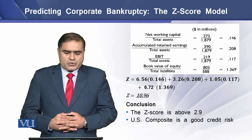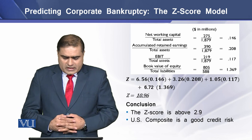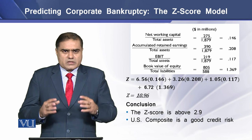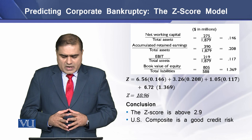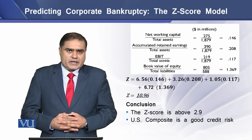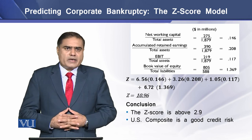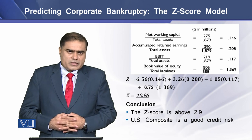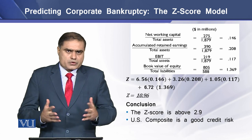Putting the values into the model, we get a Z-score of 10.96. This Z-score of 10.96 is much higher than the benchmark Z-score of 2.90. So we can say that this particular firm has no chance of bankruptcy in the days to come, and it is a good credit for the lender the firm goes to.